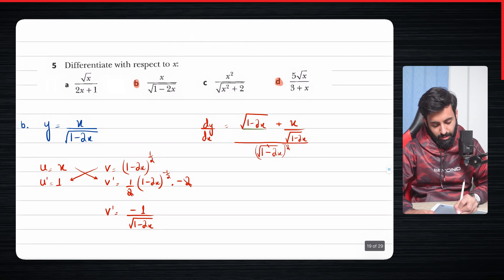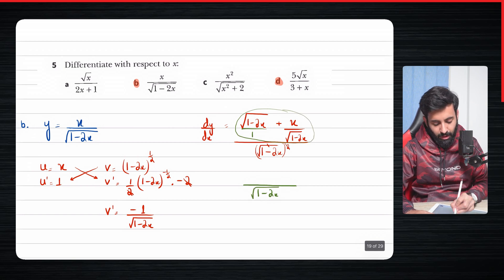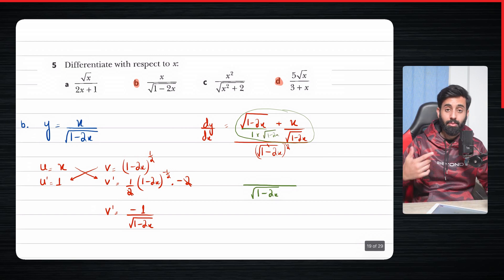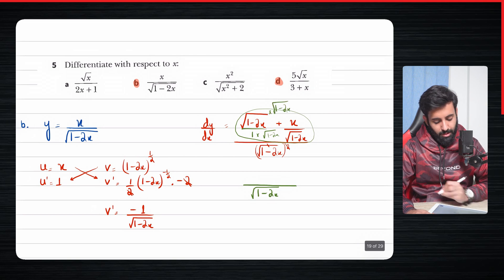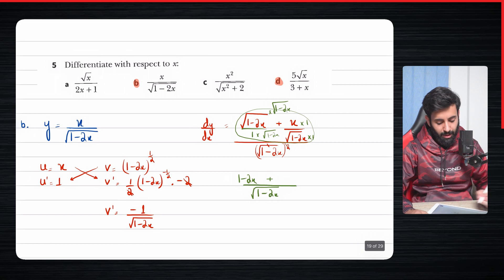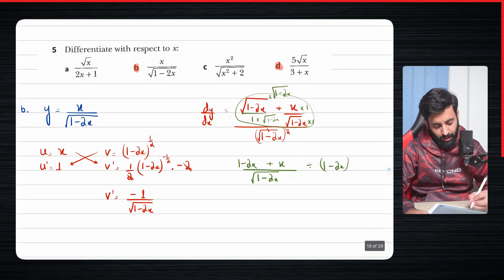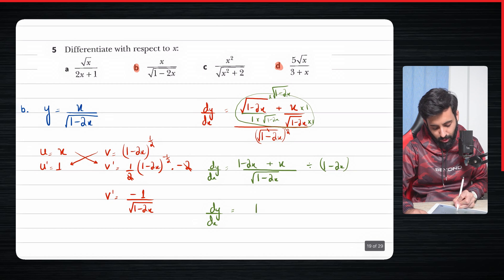From this point there's a decent amount of simplification. The LCM of the numerator is the square root of 1 minus 2x. So the first term, square root of 1 minus 2x, gets multiplied by the square root of 1 minus 2x giving 1 minus 2x. The second term plus x gets multiplied by 1, so it remains plus x. The whole numerator is then divided by 1 minus 2x.